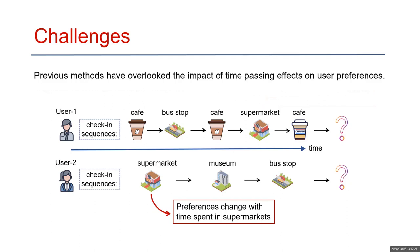Additionally, current methods for capturing dynamic preferences remain within a discrete space, whereas these preferences often transition within a continuous space. This is one of the key challenges that currently exist in POI recommendation.